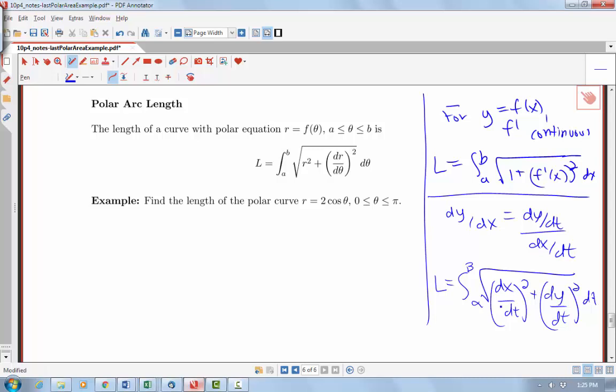So what about getting the formula for arc length when we have a polar equation? Well, remember that we can write down a parametric form of the equation, given a polar equation, using the formula x equals r cosine theta and y equals r sine theta.